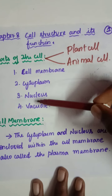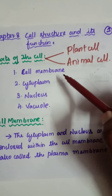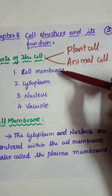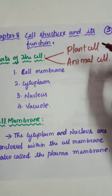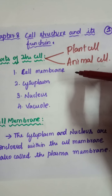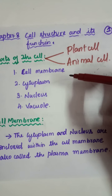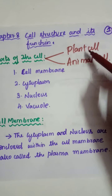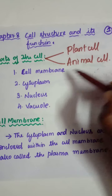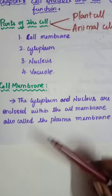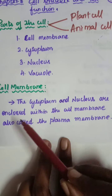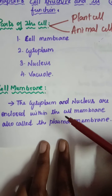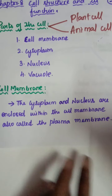First, what do we mean by cell membrane? The cell membrane is the outer layer of the cell. It is a basic component of the cell. The cytoplasm and nucleus are enclosed within the cell membrane. The cell membrane is also called the plasma membrane. Both plant cells and animal cells have a cell membrane.